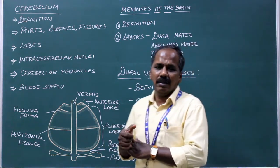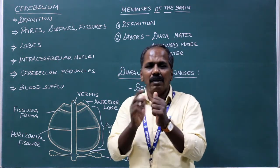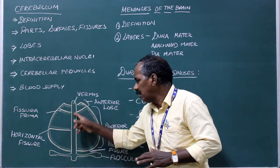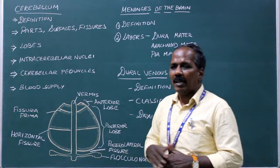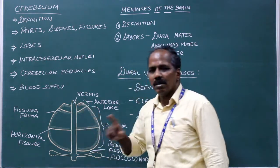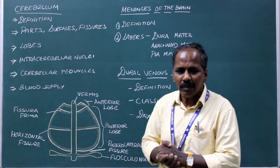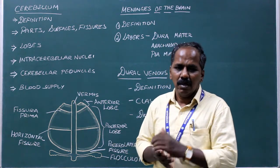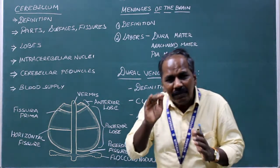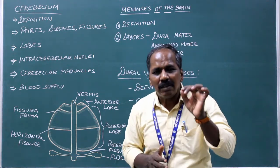Features and parts of the cerebellum. It consists of two cerebellar hemispheres connected in the midline by a worm-like structure known as the vermis. It has two surfaces: superior surface and inferior surface. On the inferior surface there is a deep median notch known as vallecula.